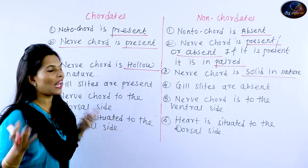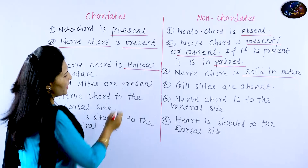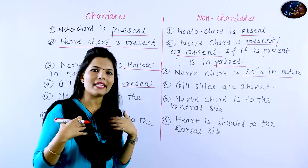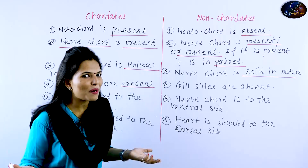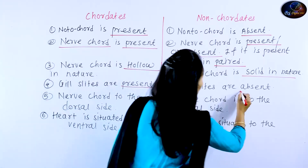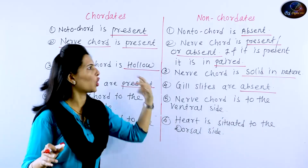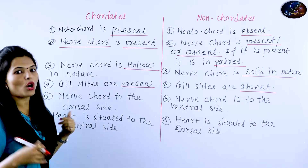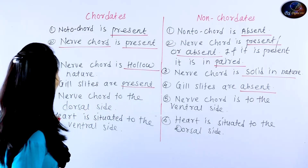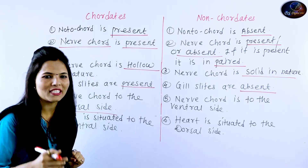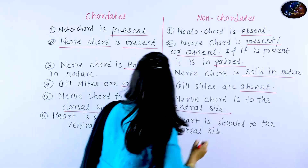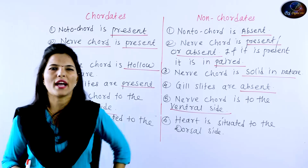Next: gill slits. Gill slits are present in chordates at every stage. They may convert to lungs. In non-chordates, gill slits are absent. The nerve cord in chordates is on the dorsal side. The nerve cord in non-chordates is on the ventral side.